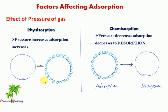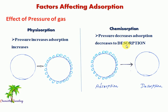Next parameter: effect of pressure of gases. In physisorption, as pressure increases, adsorption increases — more gas molecules stick to the solid surface. When pressure decreases, desorption occurs and the process is reversed. So in physisorption, pressure increase leads to increased adsorption. In chemisorption, pressure increase leads to desorption — the adsorption decreases and the chemisorption is reversed.